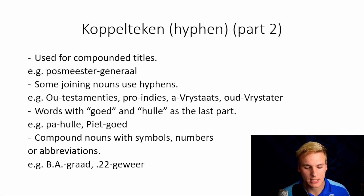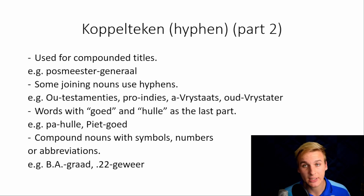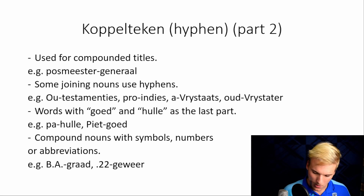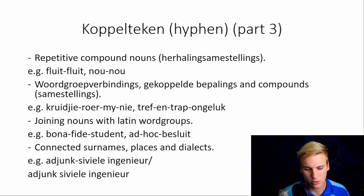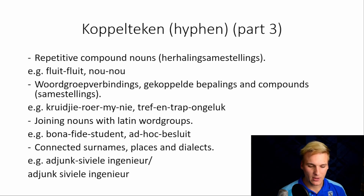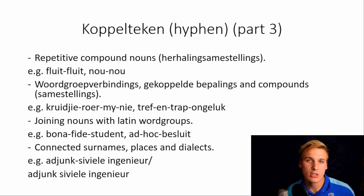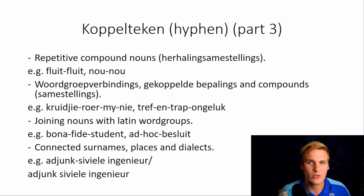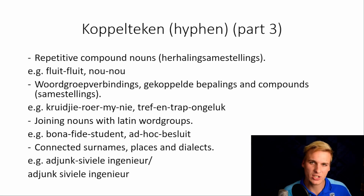Compound nouns with symbols, numbers, or abbreviations — for example: die B.A-graad, or the B.A. degree, and punttwee-tweetgeweer. The koppelteken, Part 3 — repetitive compound nouns. For example: fluit-fluit and nou-nou. Fluit-fluit, if you translate it directly, is 'whistle whistle' — in Afrikaans, in a children's book: 'Fluit-fluit, my storie is agt' — whistle whistle, my story is done. Nou-nou just means a bit later: 'Ek sal nou-nou die skool goed was' — I'll wash the dishes just now.